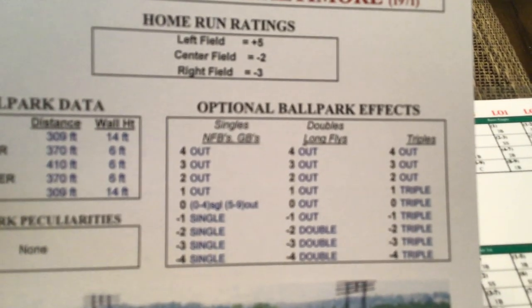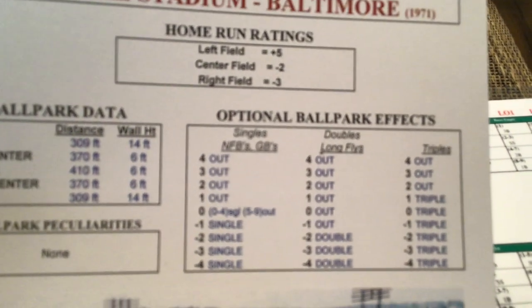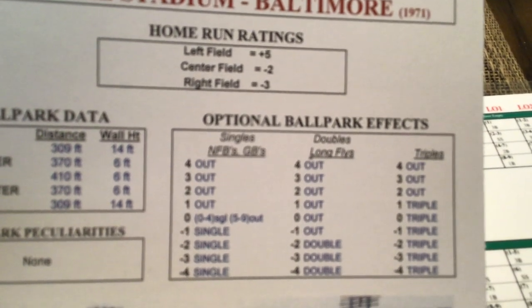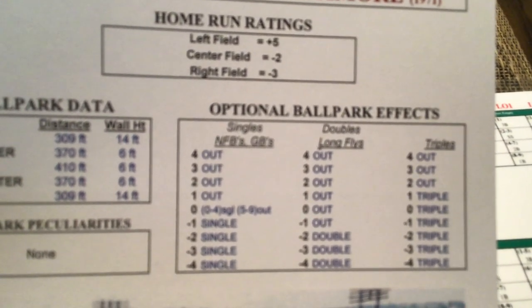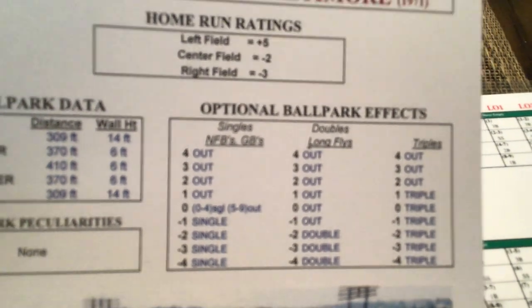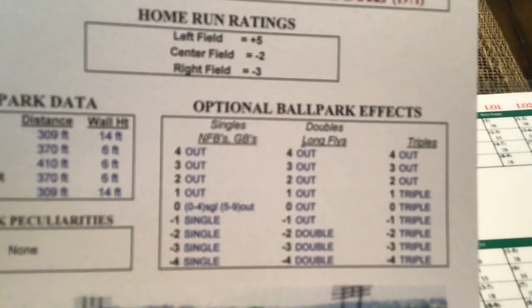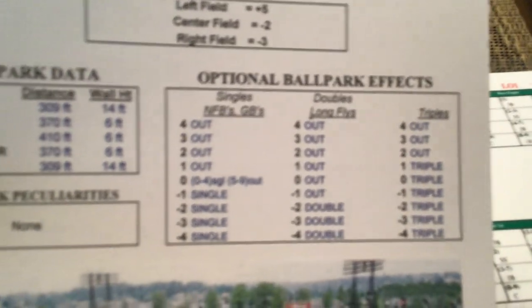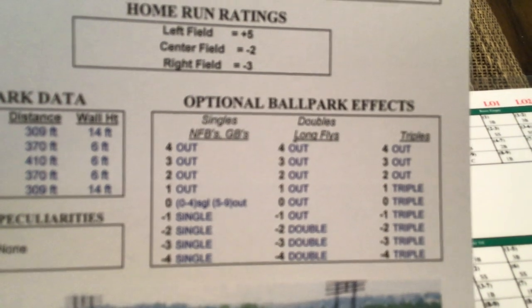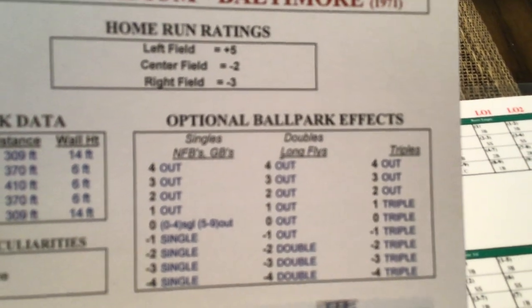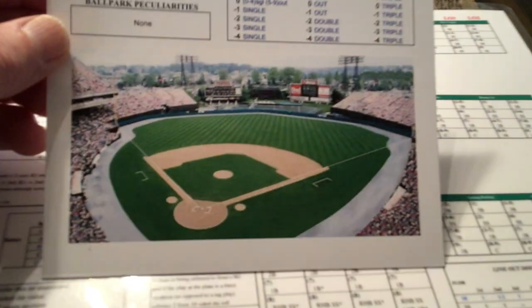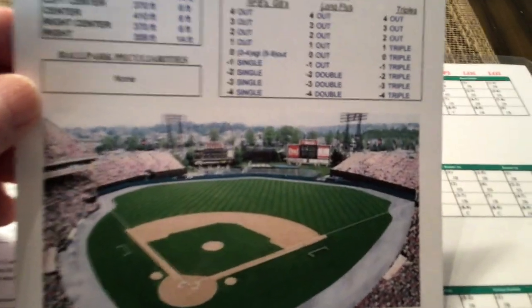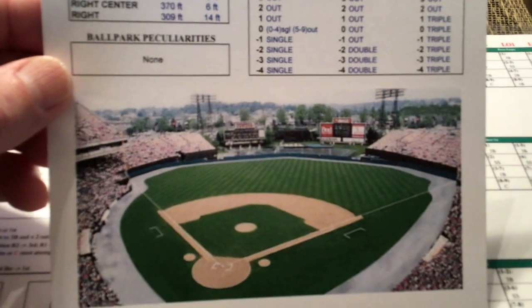For the optional ballpark effects, which I use, the ballparks are rated for singles, doubles, and triples, from plus four to minus four. Looking at this example: the singles are split right up the middle — half singles, half outs. Doubles have more outs than doubles. Triples have more triples than outs, so you can say it's a good triple park, not a good double park, and an average singles park. Then you get a ballpark picture below that — here's Memorial Stadium from 1971. That's the ballpark card.